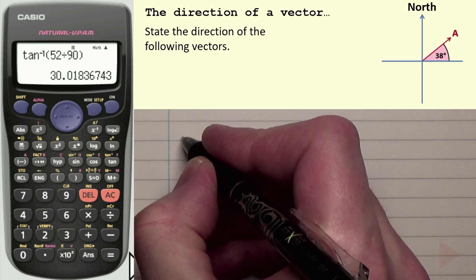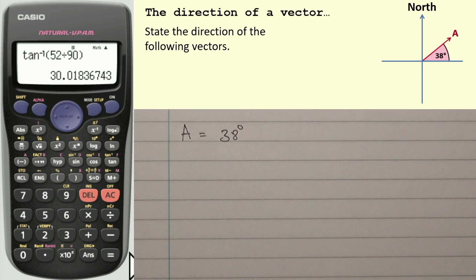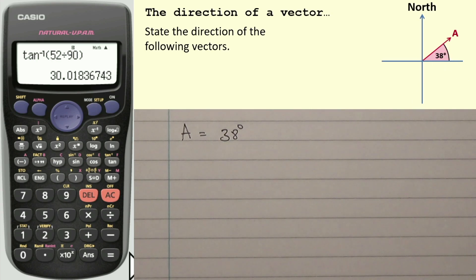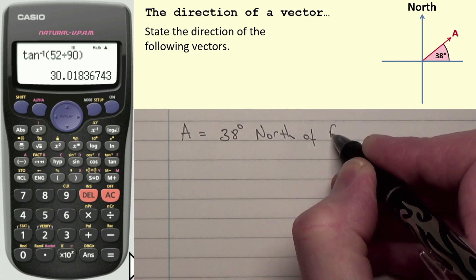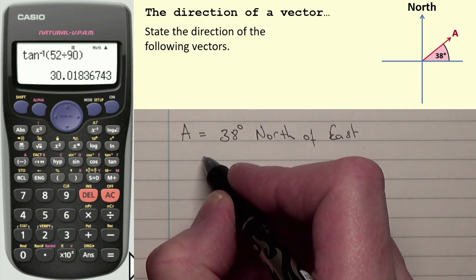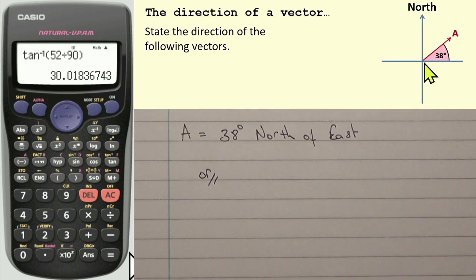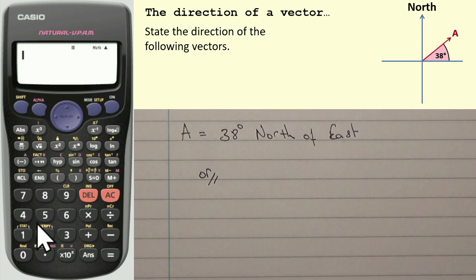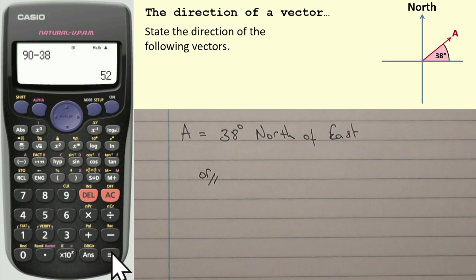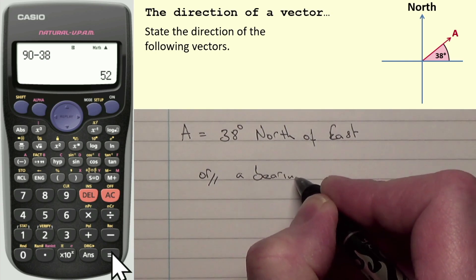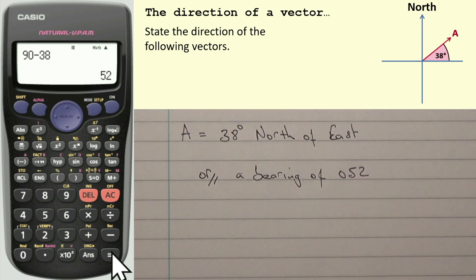Vector A: it is 38 degrees north of east. As a bearing, east is 090 and the vector is between 000 and 090, so I subtract 38 from 90: 090 − 38 = 52. So the bearing is 052.